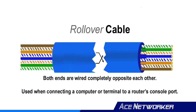Last is the rollover cable. A rollover cable is created when the wires on each end of the same cable are exactly opposite of each other. You typically use a rollover cable to connect a computer or terminal to a router's console port for direct access to the router's settings and configuration. You'll often hear someone asking for a rollover cable when connecting to the console port on a router, or sometimes a switch.